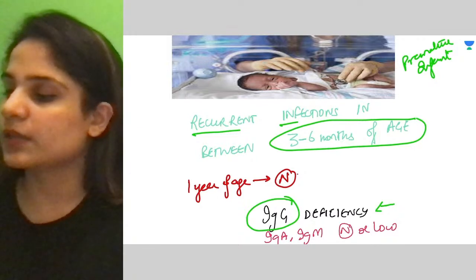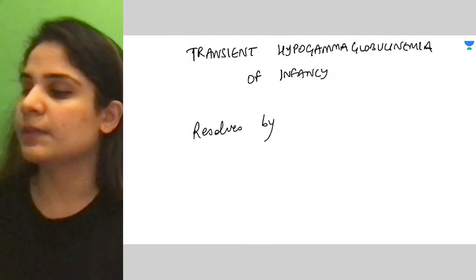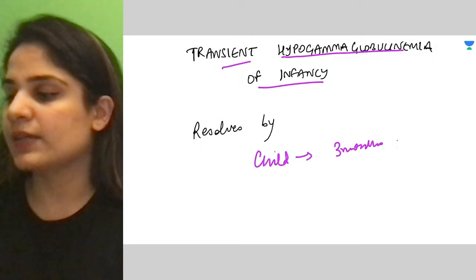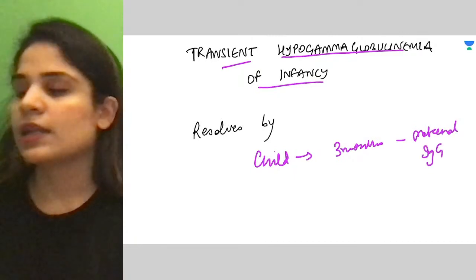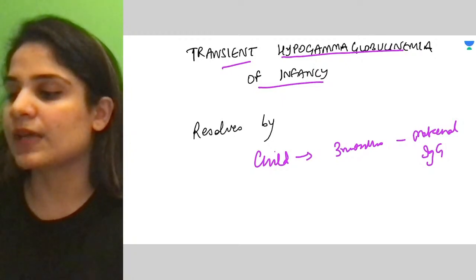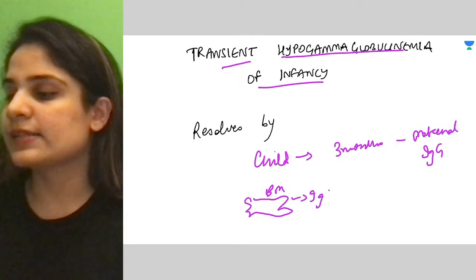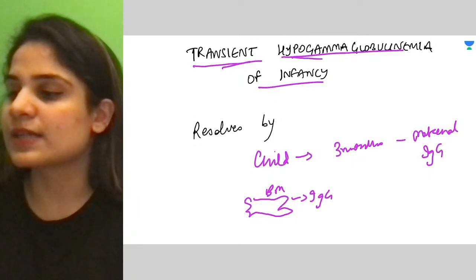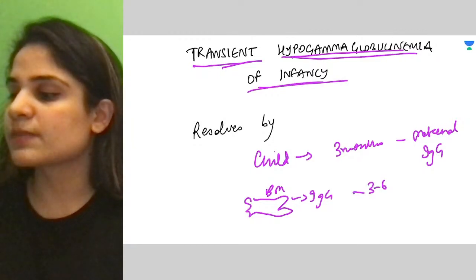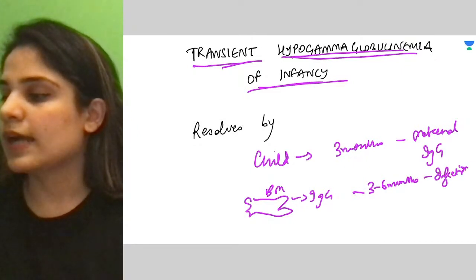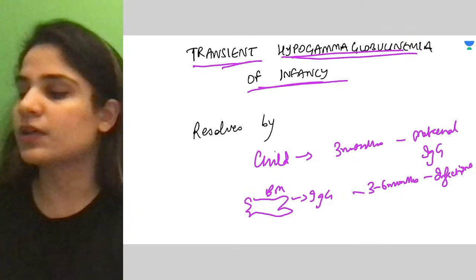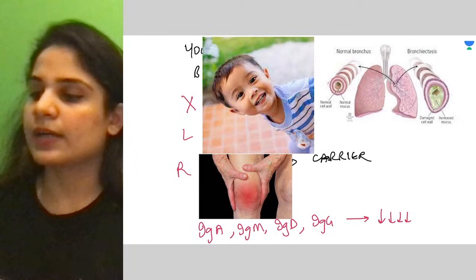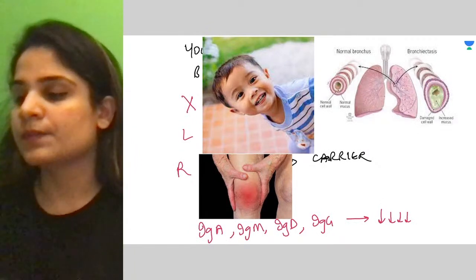What happens is that up to three months of age, infants have maternal IgG. After three months, they start developing their own IgG from the bone marrow. Premature infants are unable to make their own IgG in sufficient levels, so they develop transient hypogammaglobulinemia of infancy. Between three to six months they get recurrent infections. This is transient — it resolves automatically between one to three years of life.